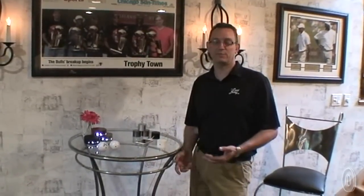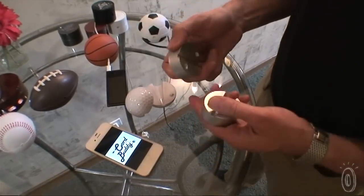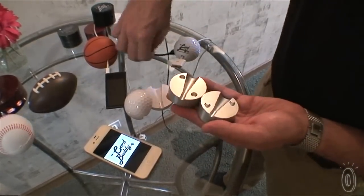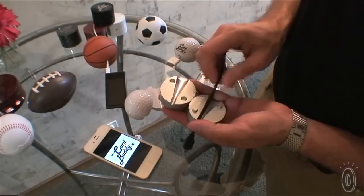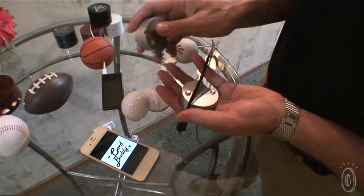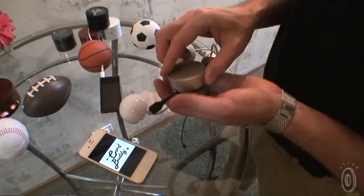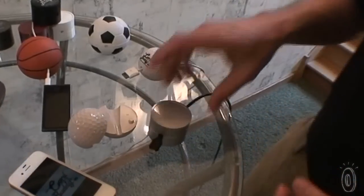Cord Buddy weighs about eight ounces. You take your own cable, lay it through the channels, and then magnetically snap Cord Buddy together to hold your cable in place. Cord Buddy offers three different styles.